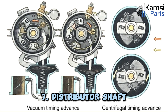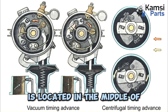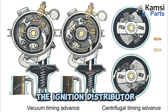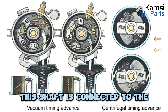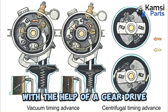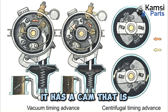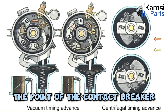7. Distributor shaft. The distributor shaft is located in the middle of the ignition distributor. This shaft is connected to the camshaft of the engine with the help of a gear drive. It has a cam that is used to break the point of the contact breaker.